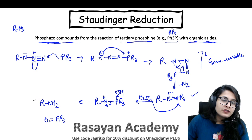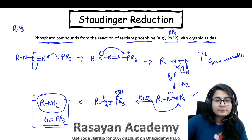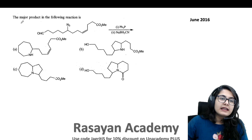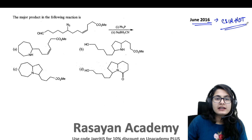So this is what you get by the Staudinger reduction of a simple organic azide in the presence of a tertiary phosphine, later treated with water. You get the amine and you get the phosphine oxide. We see many questions in which the amine plays a big role, so let's see them one by one.